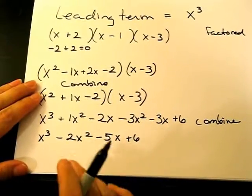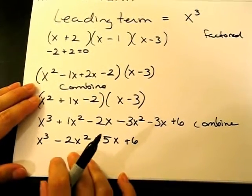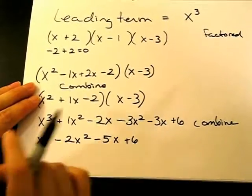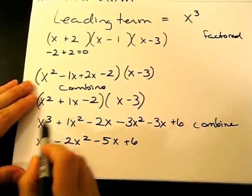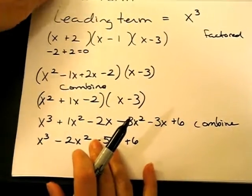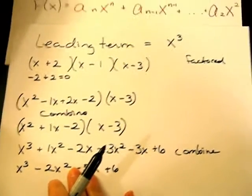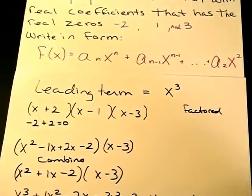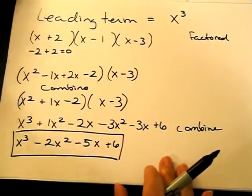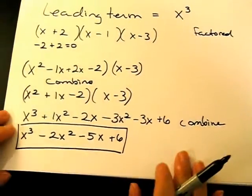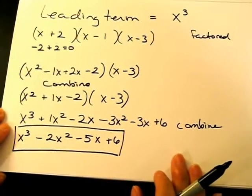So this is the polynomial function with real coefficients, and the real zeros of negative 2, 1, and 3 in the general form of a polynomial function. So I hope that was helpful. Thanks for taking the time to listen today. Have a nice day.